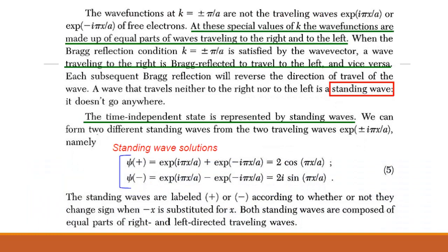At these special values of k, the wave functions are made up of equal parts of waves traveling to left and right. At Brillouin boundary, the wave function is reflected back to the opposite direction. Hence standing waves, waves that do not travel to the right or left, are formed.